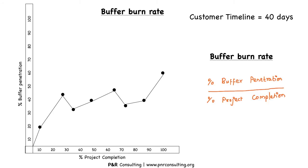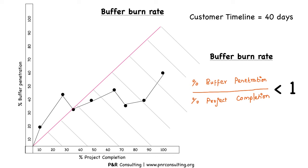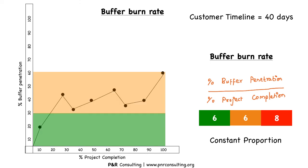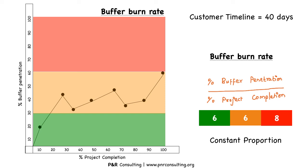You can plot several such points based on buffer penetration and project completion. A project manager needs to ensure the buffer burn rate is lesser than 1. If it equals 1, buffer penetration is equivalent to project completion — nothing much to worry about, but there is a possibility of slippage. If it is less than 1, the project is going fine. If it is greater than 1, the project is consuming the buffer at a much faster pace. With our linear buffer model with constant proportion, we can define red, yellow, and green zones in the graph. Notice that even for 0% project completion, up to 30% buffer consumption is allowed, which is not logical. So we need to define the buffer zones differently.